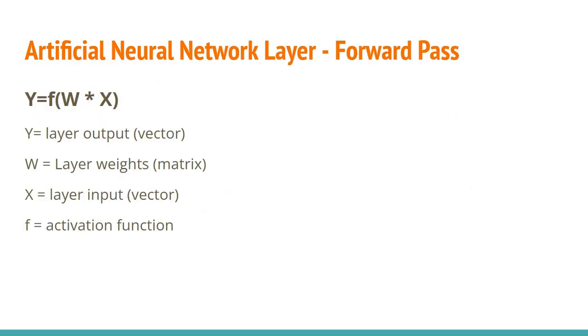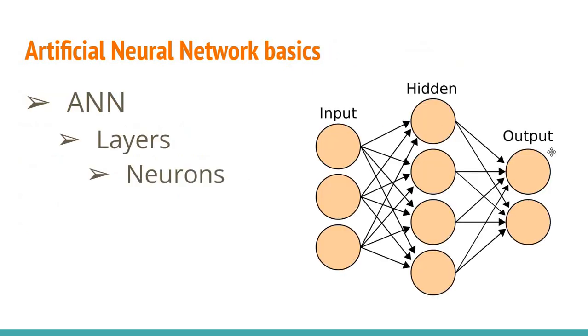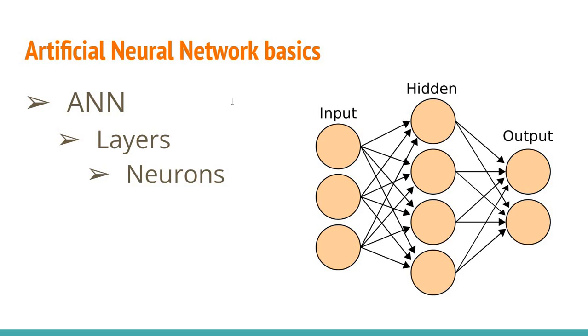So we have so-called forward path where data flows from input to output. This is known as the forward path. And basically we need just to compute this function.